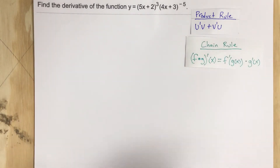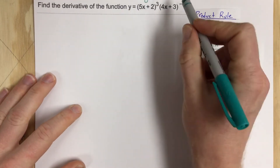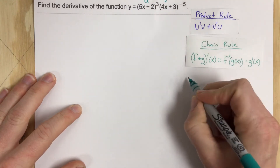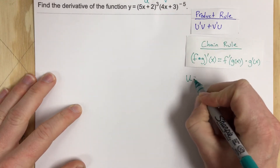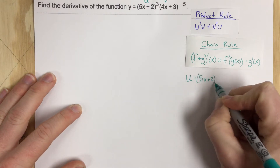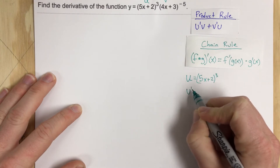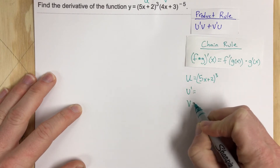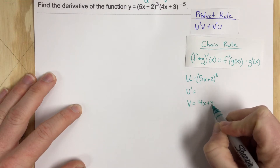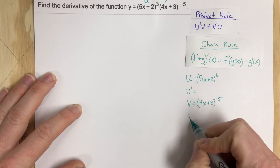Here's how it's going to work. We're going to label this as the u function and this as the v function. So u equals 5x plus 2 to the third power, and we're going to find u prime. Then v is going to equal 4x plus 3 to the negative fifth power, and v prime is here.